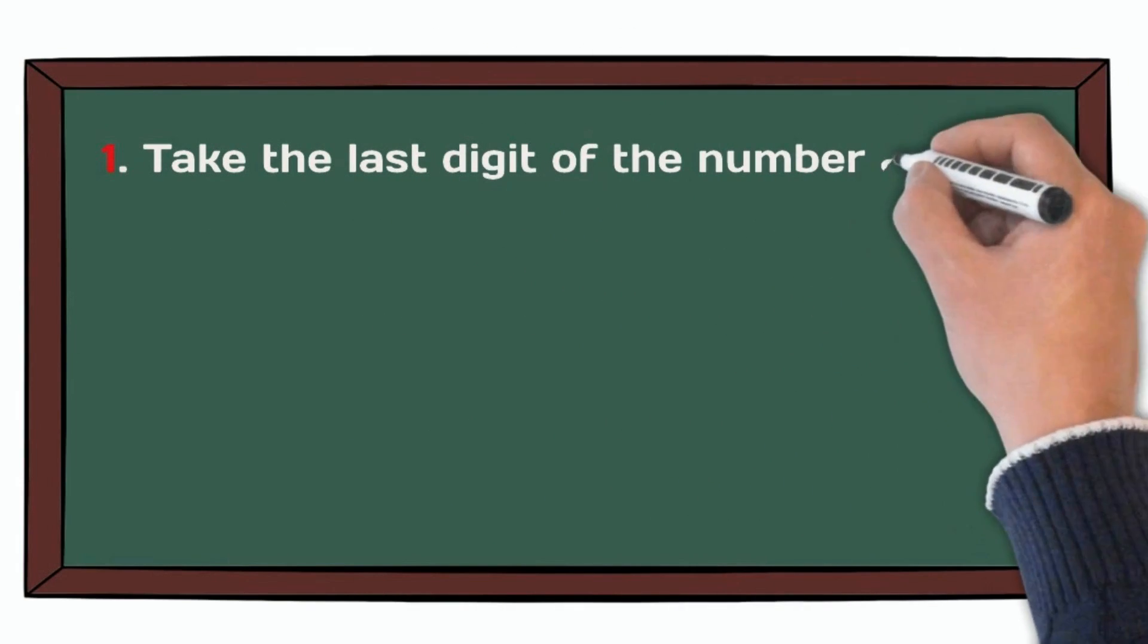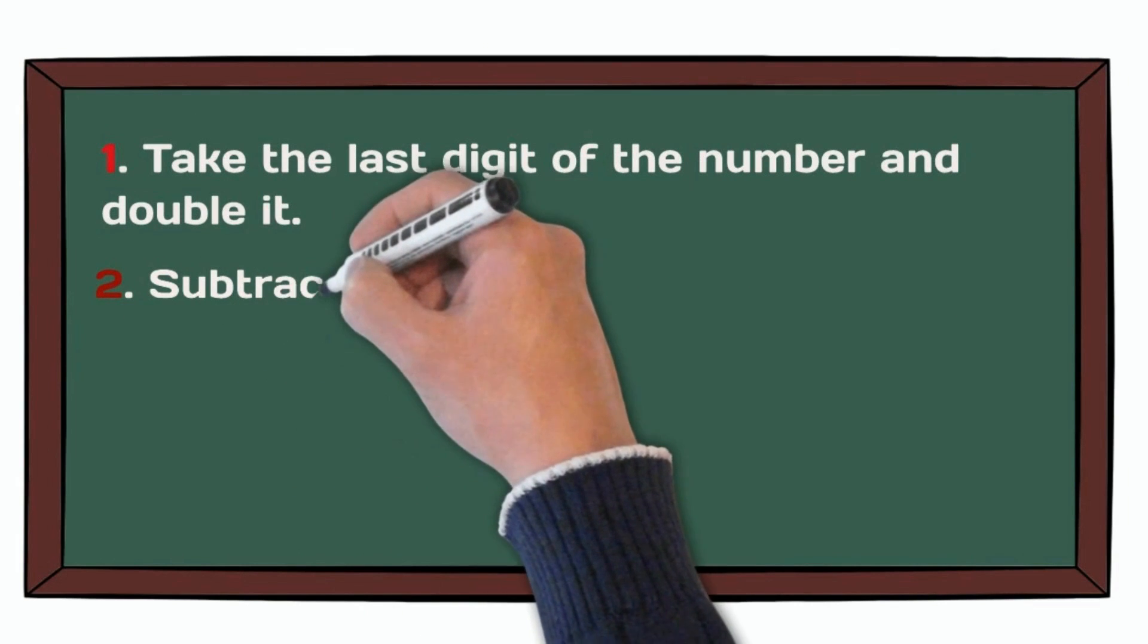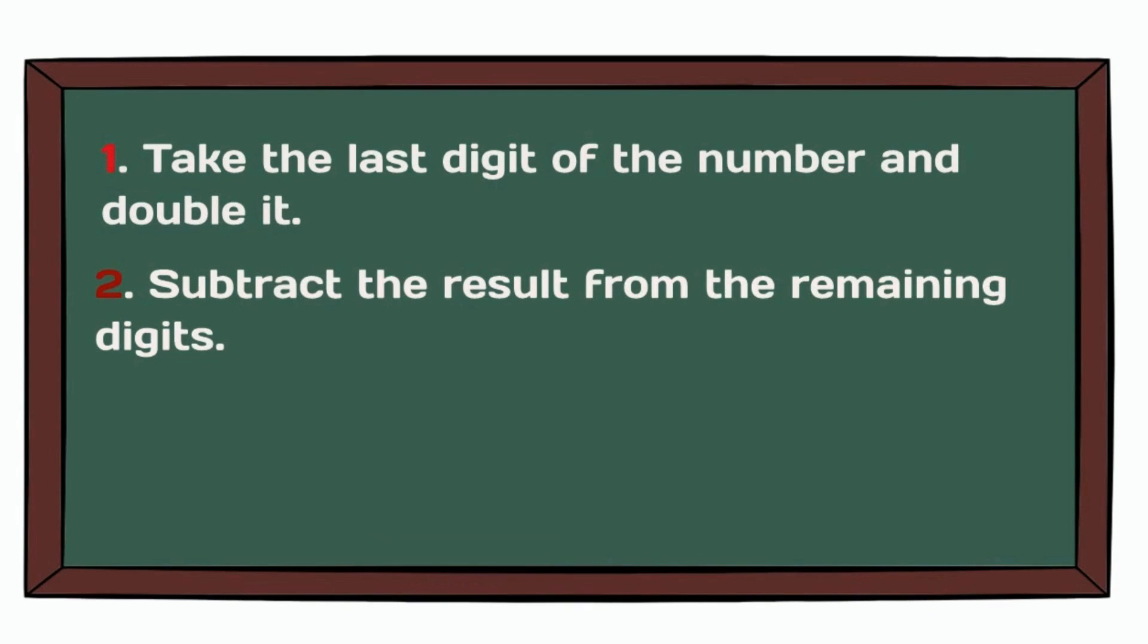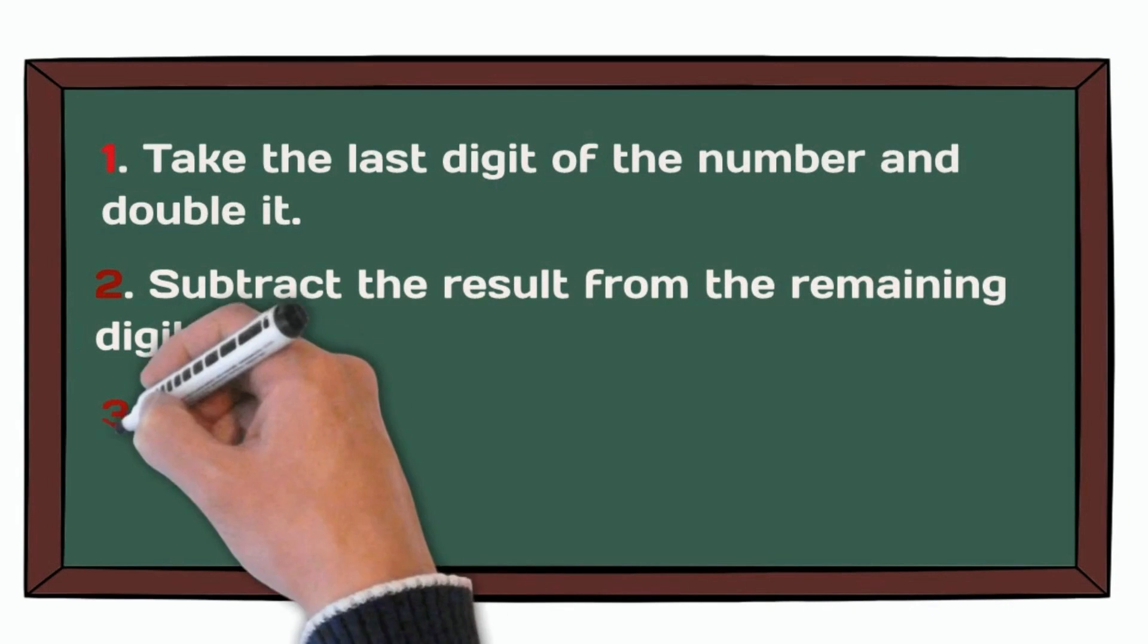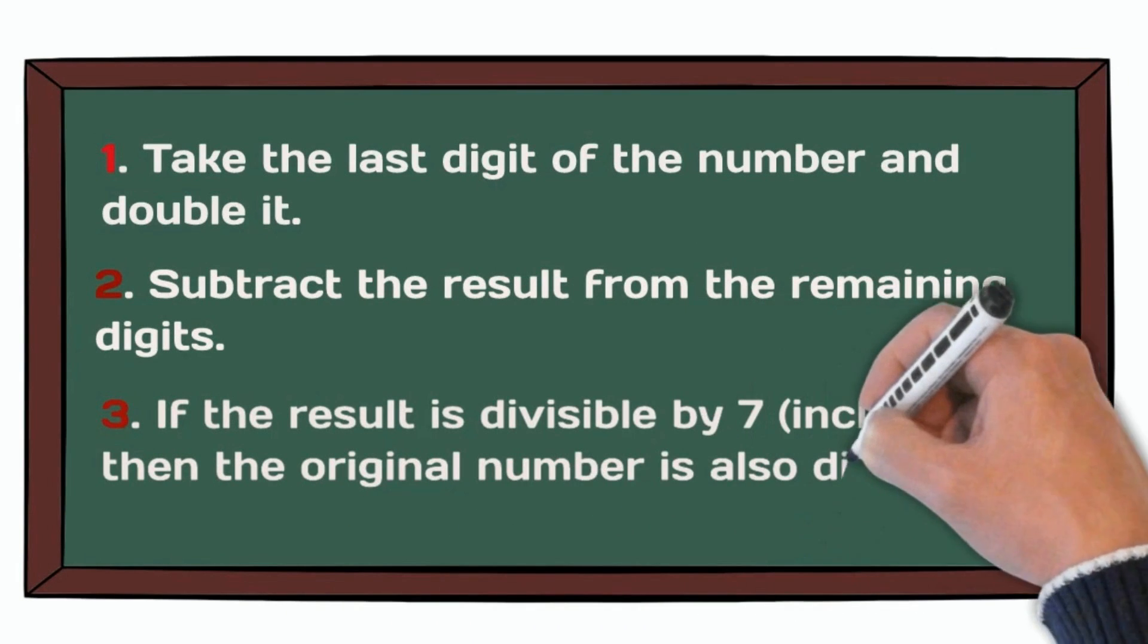We have to follow three steps. Take the last digit and double it. Second step, subtract the result from remaining digits. Third step, if the result is divisible by seven, including zero, then the original number is also divisible by seven.